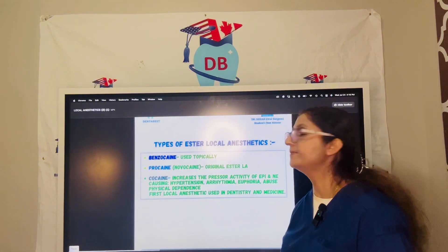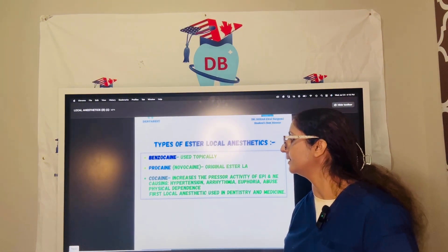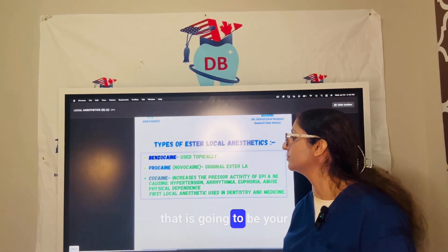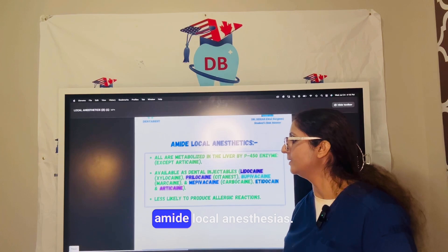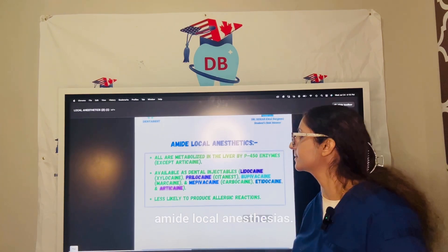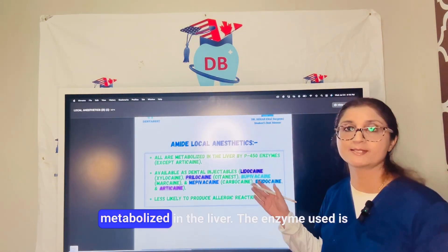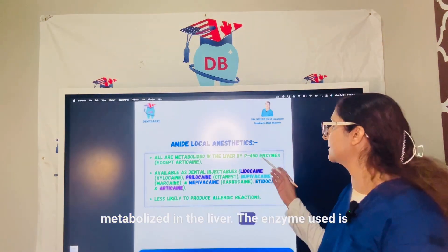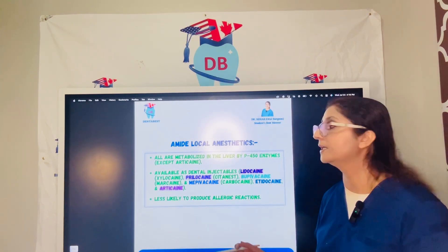When we talk about the other group — amide local anesthetics — all of them are metabolized in the liver. The enzyme used is the cytochrome P450 system.